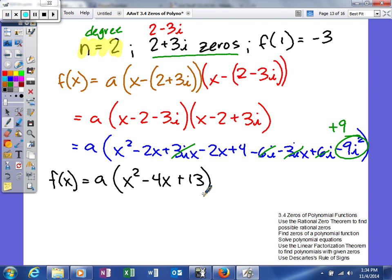So that's our polynomial. I'm going to plug in 1 for all the x's and set it equal to negative 3. So say negative 3 equals a parentheses 1 squared minus 4 times 1 plus 13. This will be 1 minus 4 so negative 3. So we'll get a nice little positive 10 here. So a in our problem will get a to be negative 3 tenths.